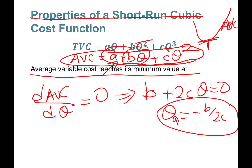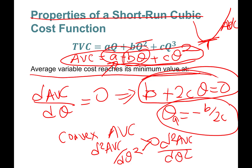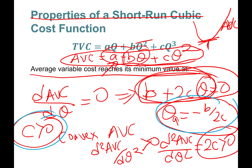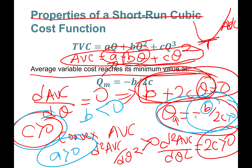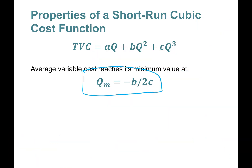We also need to ensure this is a convex function. For a convex AVC curve, the second derivative of AVC must be greater than zero. Taking another derivative gives 2c, so 2c must be positive, meaning c must be positive. That is requirement one. If c is positive, b must be negative so that the minimum quantity is positive. And a must also be positive.